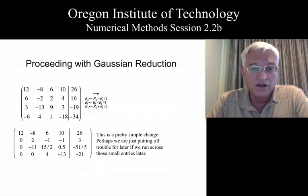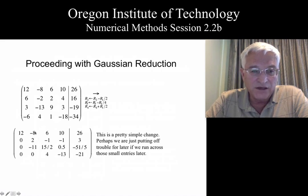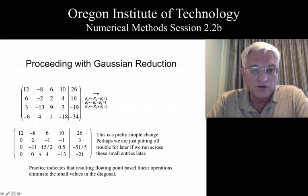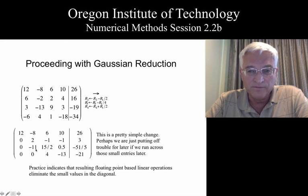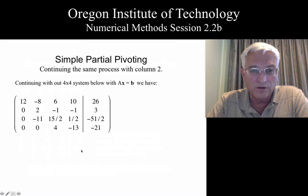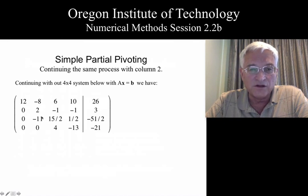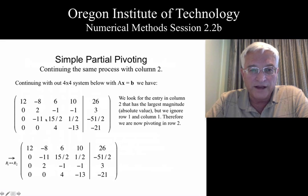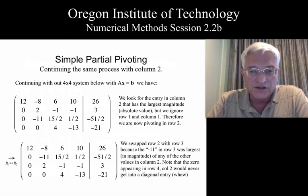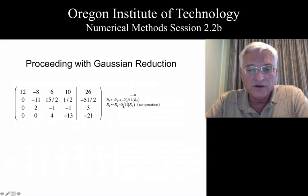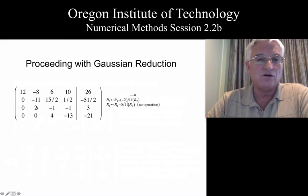Now we are ready to look at the lower 3x3 submatrix and continue the reduction in column 2. We do the same thing: look for the entry with the largest magnitude, which in this case is minus 11. Copying the entire system to the next page, we confirm minus 11 is the largest value in magnitude. So we rearrange rows 2 and 3, creating a new pivot location in the 2,2 position, and then set up the appropriate row reduction transformations to put zeros in both target locations.